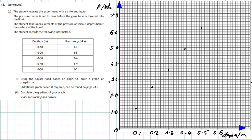All we have to do is draw the best fitting straight line from the origin. We can see that most of the points lie very close to the line. This gives us a straight line passing through the origin, which means that pressure is directly proportional to depth in metres.